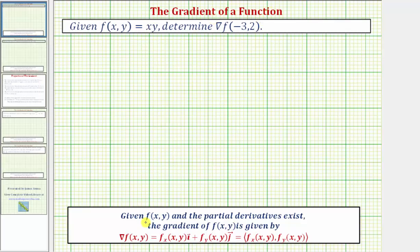Looking at our notes, given the function f of x, y and that the partial derivatives exist, then the gradient of f is equal to the vector-valued function where the x component is equal to the partial of f with respect to x, and the y component is equal to the partial of f with respect to y. We'll first find the gradient of f, then discuss what it means and show it graphically.